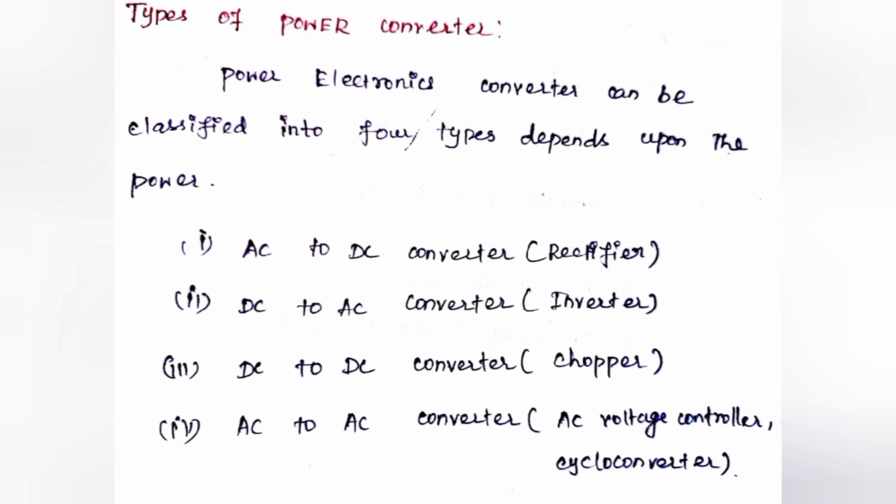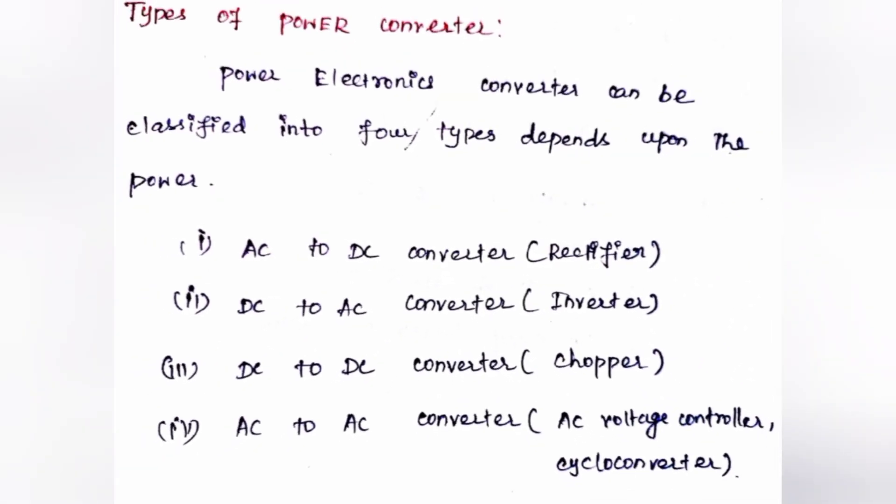Mainly, we have two types of voltage that are widely used these days: AC voltage and DC voltage. Depending upon the application, we use these two voltages. This voltage can be converted from one type to another by using special converters. Power electronic converters can be classified into four types depending upon the nature of power.